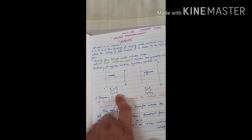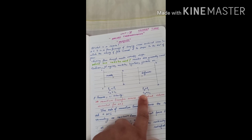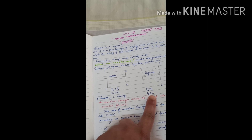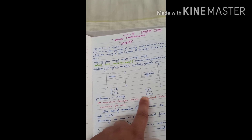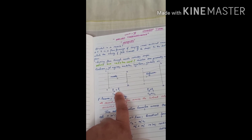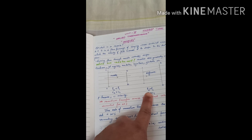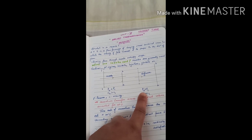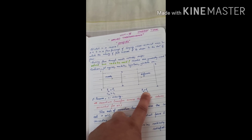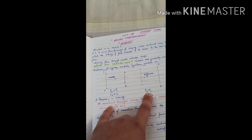In the case of a diffuser, the exit velocity C2 is less when compared to the entry velocity C1. Whereas in a nozzle the pressure at the exit is less — the pressure drops as the fluid leaves. In a diffuser, the pressure increases at point 2 compared to point 1.